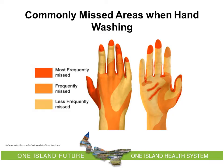Commonly missed areas when hand washing: Proper hand hygiene is essential for healthcare workers. When proper hand hygiene is not completed, there are often areas that are missed. This image displays areas of the hands that are less frequently missed, frequently missed, and most frequently missed. By following the 12 steps and concentrating on proper hand hygiene, you as a healthcare professional are preventing the spread of infection.